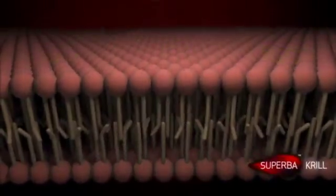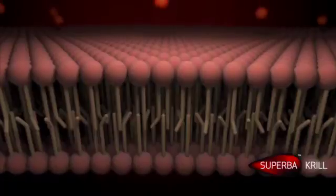Superba Krill omega-3s are different. They are bound to powerful phospholipids, building blocks for the cells.